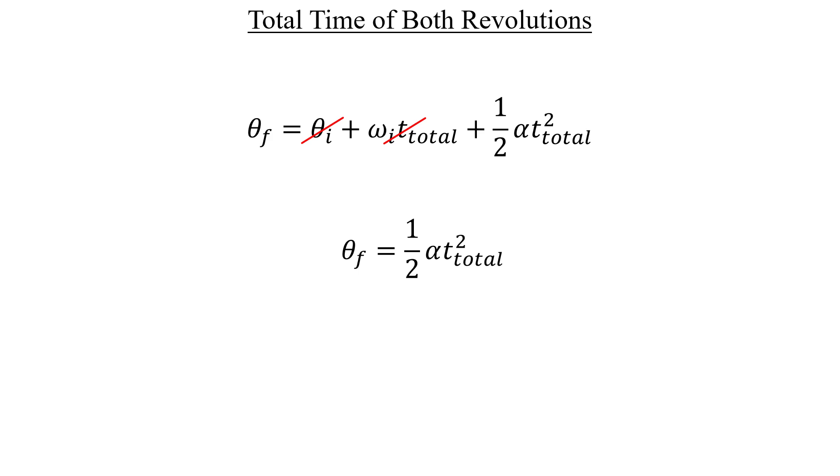So let's think about how to apply this. When the CD drive rotates through a full circle, it will have undergone an angular displacement of two pi radians. And since we're investigating the time it takes for both revolutions, well that means that the angular displacement will be two full circles, right? So two times two pi radians, which we can simplify to four pi.